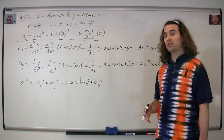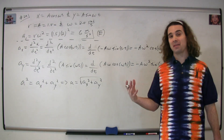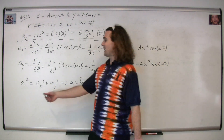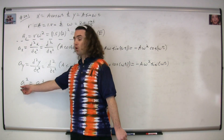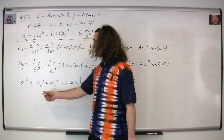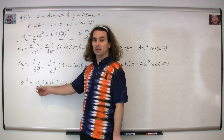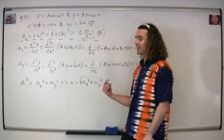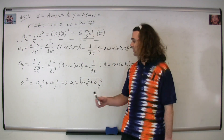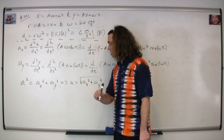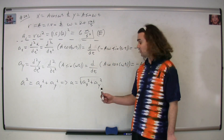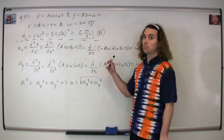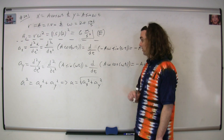Then to figure out the resultant acceleration, we can use the Pythagorean theorem: a² + b² = c². So the total acceleration squared equals the acceleration in the x direction squared plus the acceleration in the y direction squared. Taking the square root of both sides, we get that the net acceleration equals the square root of (acceleration in x)² plus (acceleration in y)².